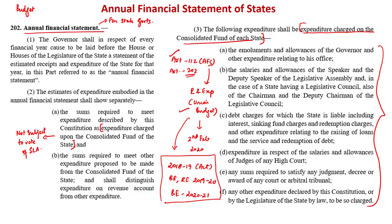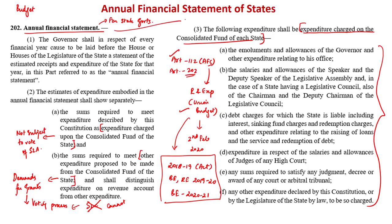The second category of expenditure consists of sums proposed to be made from the consolidated fund of the state. This expenditure is submitted as demands for grants to the state legislative assembly, where a voting process takes place. The assembly may assent, refuse to assent, or assent subject to a reduction. The state legislative council cannot vote on demands for grants — this is an exclusive privilege of the state legislative assembly. The annual financial statement also differentiates expenditure on revenue account from other expenditure.